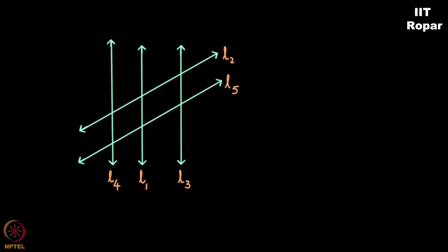Let me take an example now of these six lines L1, L2, L3, L4, L5 and L6. As you can observe, L2 is parallel to L5.